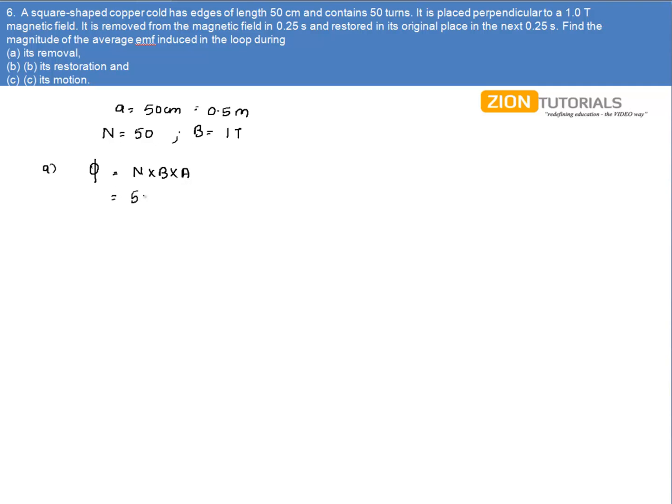On calculating, we have N is equal to 50, magnetic field is 1, and the area is given by 0.5 into 0.5. So we have 12.5 tesla meter square.